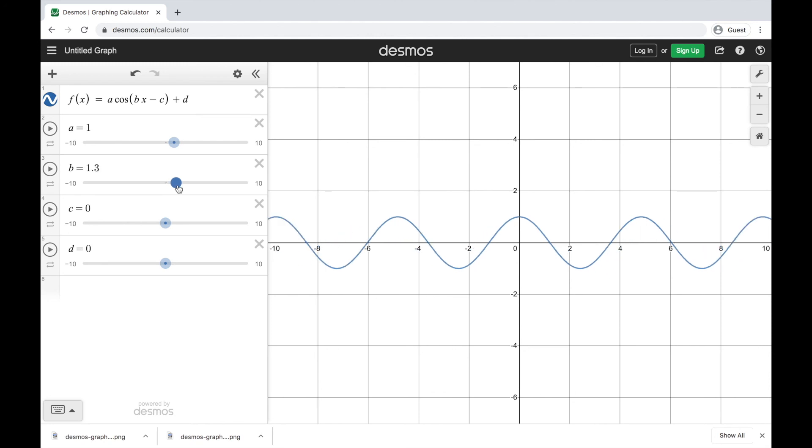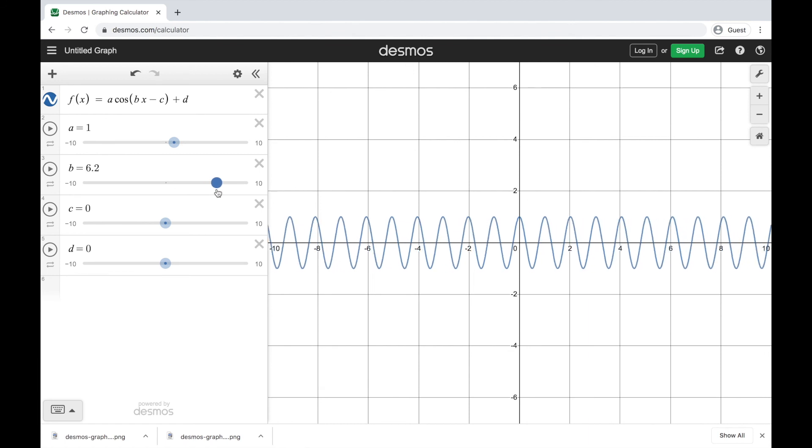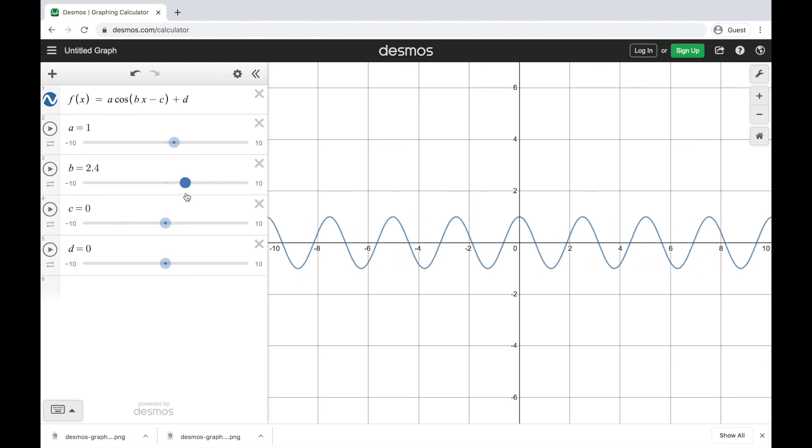If I multiply x by a number, it's going to change the frequency. It's going to change how many times it oscillates here. It's going to change my period. And just like before, negative numbers will flip it across the y-axis.